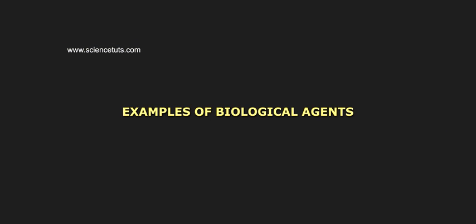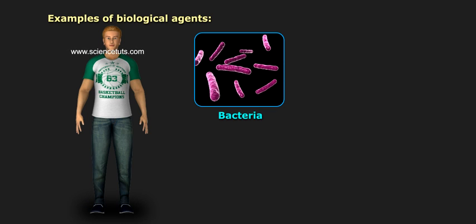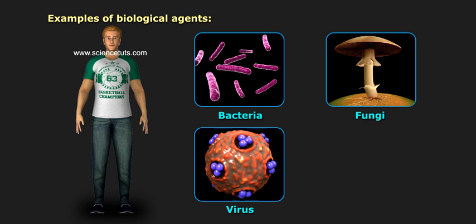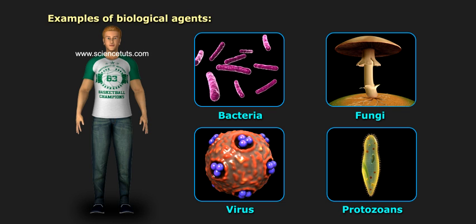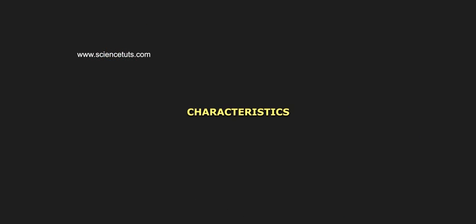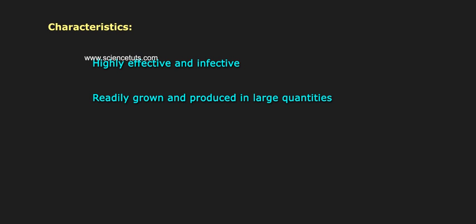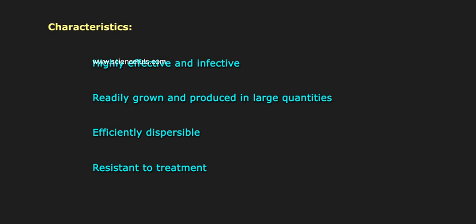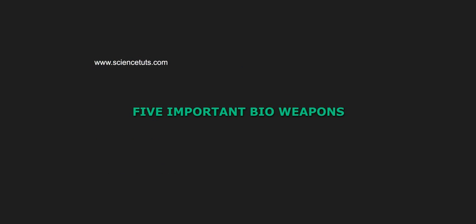Examples of biological agents include bacteria, fungi, virus, and protozoans, etc. Characteristics: highly effective and infective, readily grown and produced in large quantities, efficiently dispersible, and resistant to treatment.